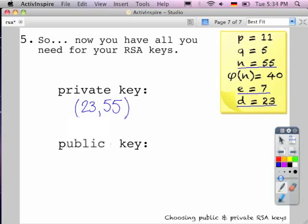For our public key, we're going to use e and the RSA modulus. And so our public key is going to be 7 and 55. And there you have it. Thank you.